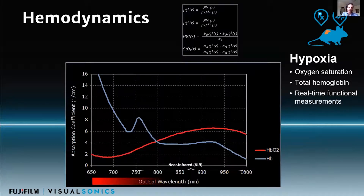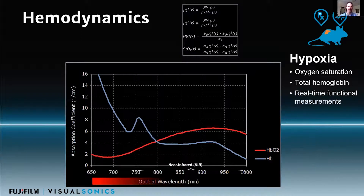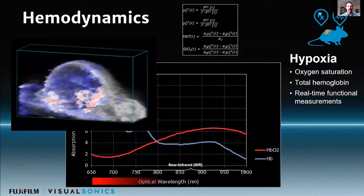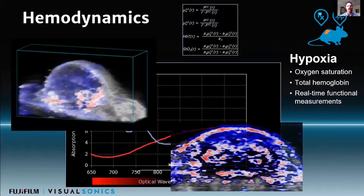We can measure more than just the flow of blood with photoacoustics. The nice thing about blood is that deoxygenated and oxygenated hemoglobin absorb differently optically at different wavelengths. At shorter wavelengths, deoxyhemoglobin absorbs a bit more light; at longer wavelengths, oxyhemoglobin absorbs a bit more light. We can do a multispectral imaging calculation to generate a map of oxygen saturation where blue is less oxygen-saturated blood and red is more oxygen-saturated blood. We can do this in tumors in the brain.